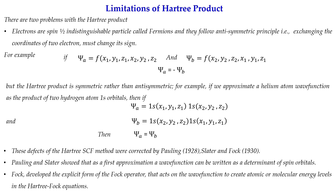There are two major limitations of the Hartree product. First, we are considering a multi-electron system but spin is not included. Second, electrons are indistinguishable particles called fermions and must obey the anti-symmetry principle: exchanging the coordinates of two electrons must change the sign of the wave function. If psi_a is a function of (x1, y1, z1, x2, y2, z2) and psi_b has the coordinates interchanged, then psi_a must equal −psi_b. However, the Hartree product is symmetric rather than anti-symmetric, so it does not satisfy this condition.